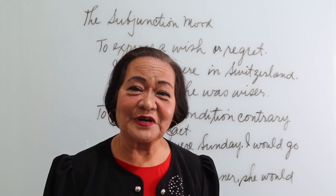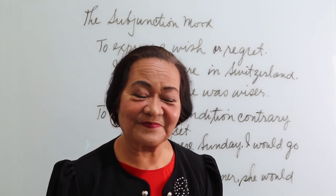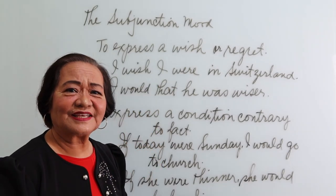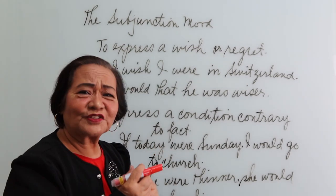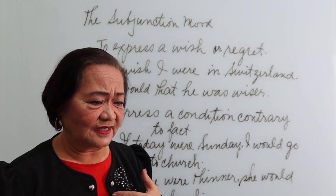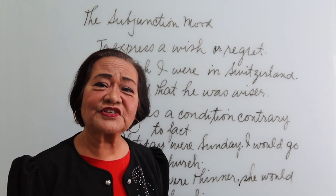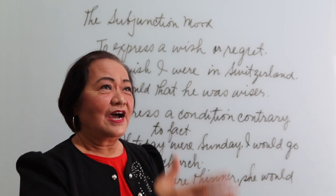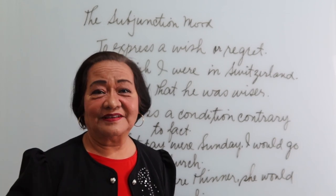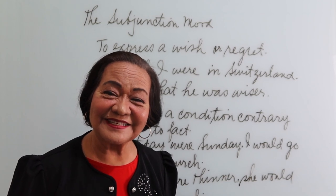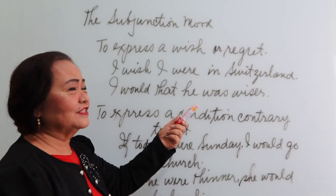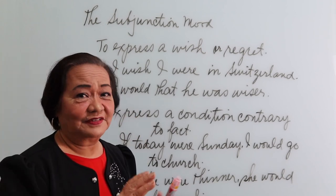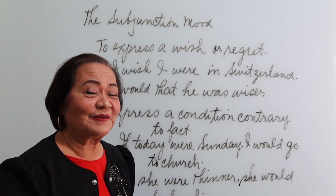The subjunctive mood is very useful, especially for expressing a wish. The subjunctive mood helps you express correctly what is not true. For instance, I am married, but if I say 'I wish I were single,' that means I am not single. 'I wish I were in the United States' — again, I am not in the United States. 'I wish I were in Switzerland' — I am not there. 'I would that he were wiser' — that means he is not wise. So you are stating something which is not true.